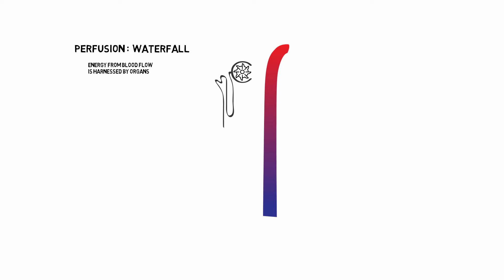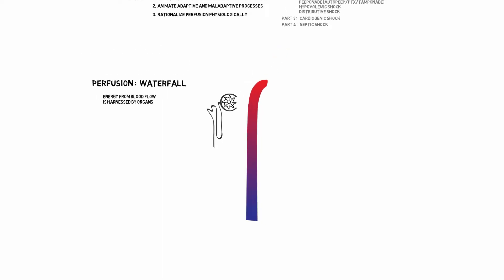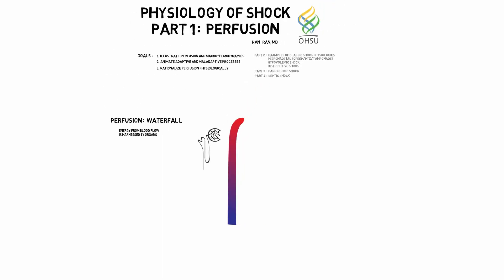So what governs flow through these turbines? Well, it depends on what's upstream, what's downstream, and the turbine itself. Let's first focus on the upstream, the arterial compartment.